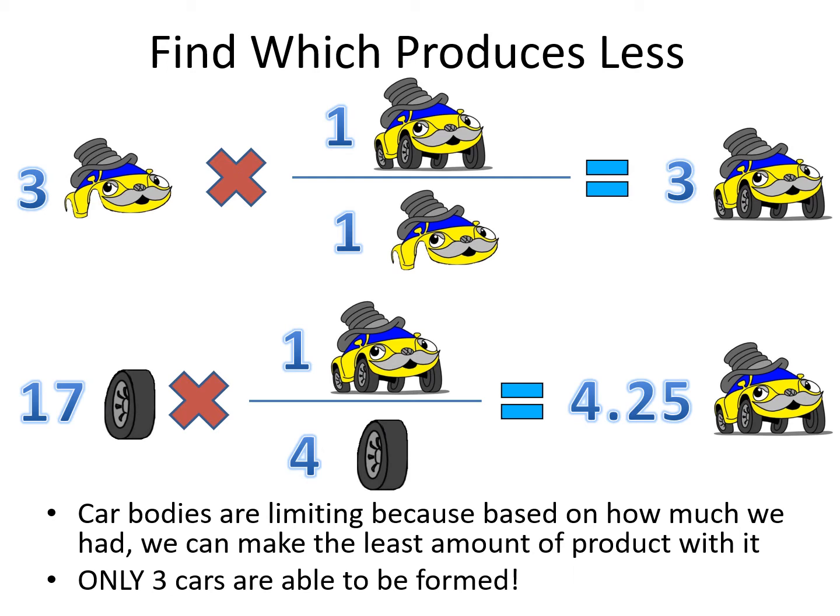Similarly, if I have 17 wheels, and I know that for every four wheels I have I can make a car, then if I use up all my wheels I can make 4.25 cars. When we compare the amounts of cars that could be made based on our starting materials, that smaller of the two amounts — which is 3 — tells us that the car bodies are going to be limiting. After we make our three cars, we're going to run out of car bodies. The same is going to be true for chemical reactions: whichever would give us the least amount of product is going to be the limiting reactant.